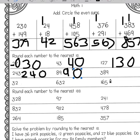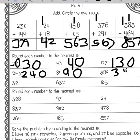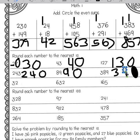Three hundred eighty-nine: we have an eight in the tens place, we have a nine to the right of it, so this is going to round up. This will become three hundred and ninety.